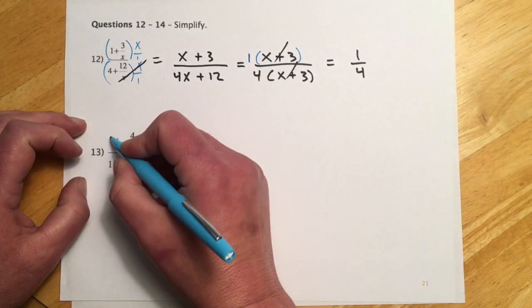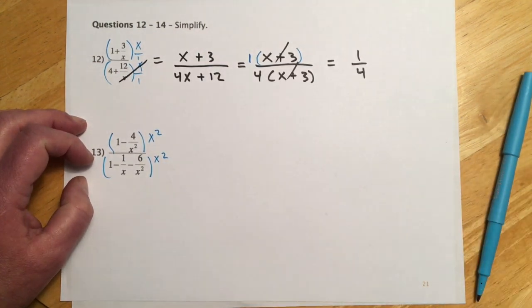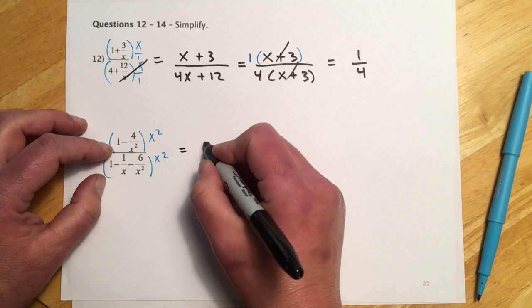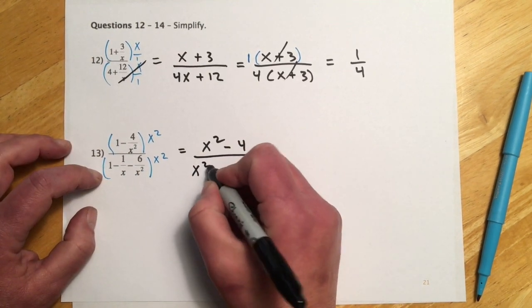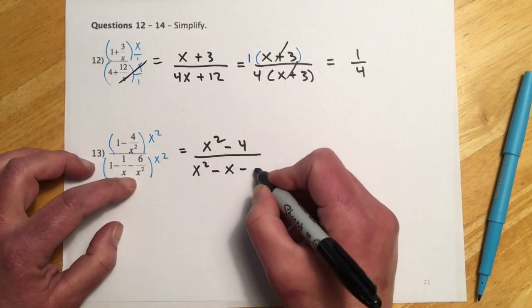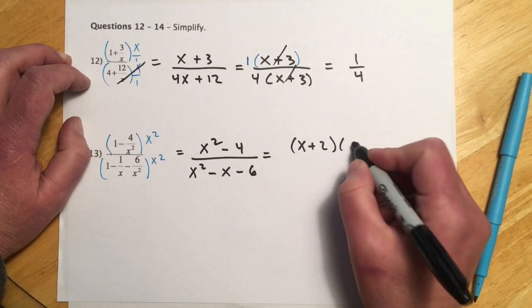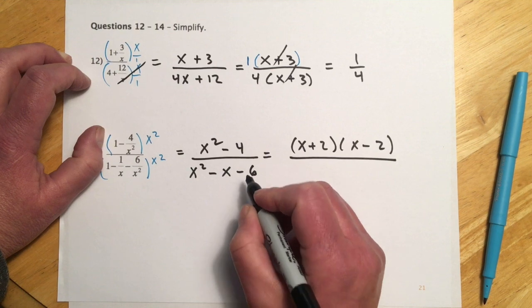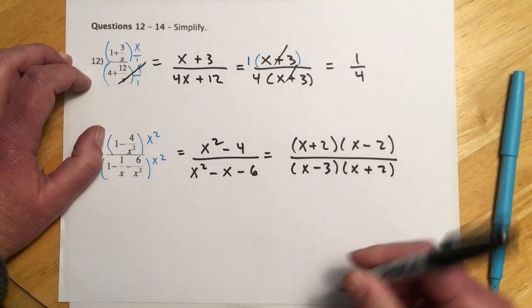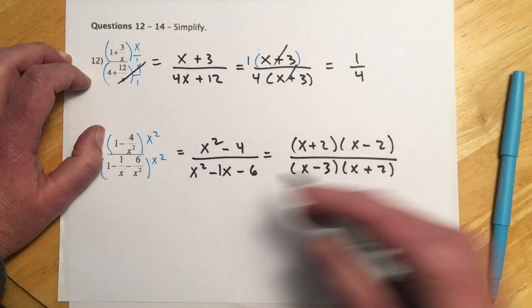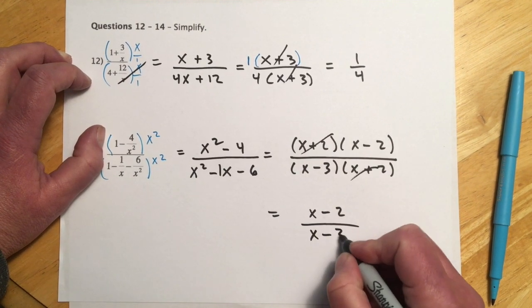Number 13: common denominator is X squared. X squared times 1 is X squared; X's cancel leaving minus 4; X squared times 1 is X squared; X into X squared leaves minus X; X squared cancels giving minus 6. Factoring: (x plus 2)(x minus 2) over... downstairs, negative 6 must add to negative 3 — wait, negative 1 — giving (x minus 3)(x plus 2). Cancel the (x plus 2)s, leaving (x minus 2) over (x minus 3).